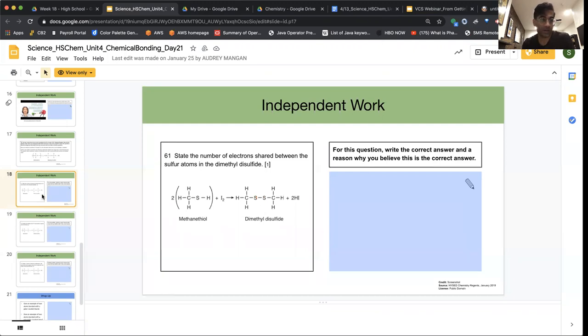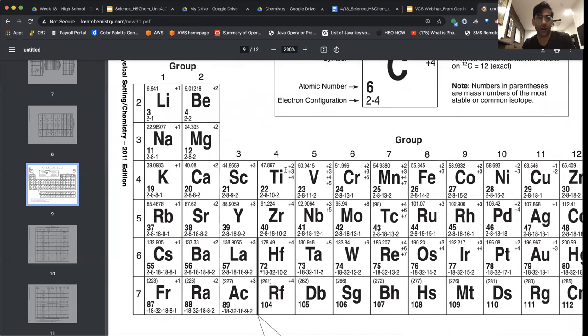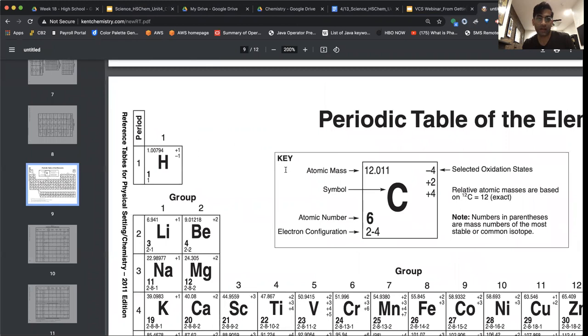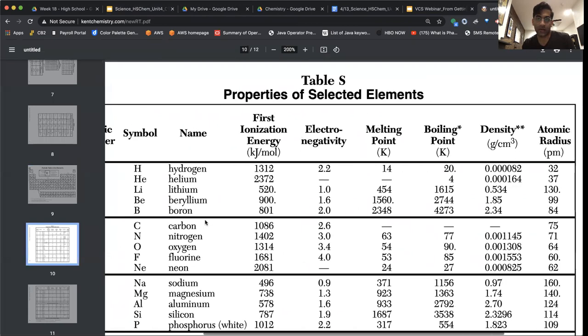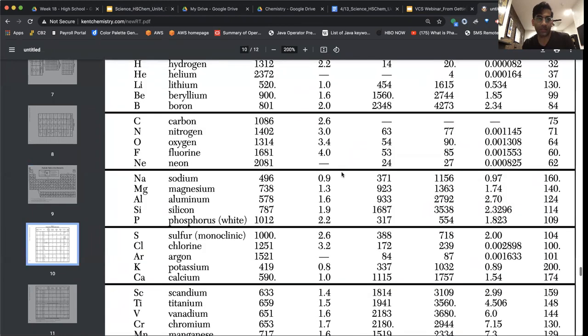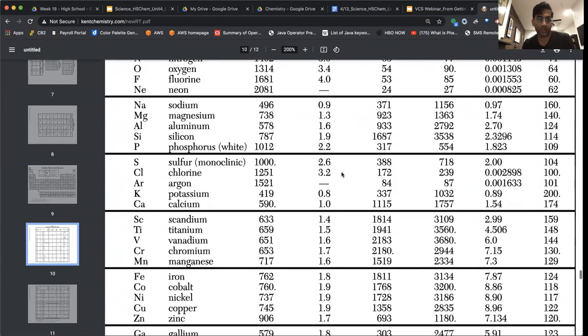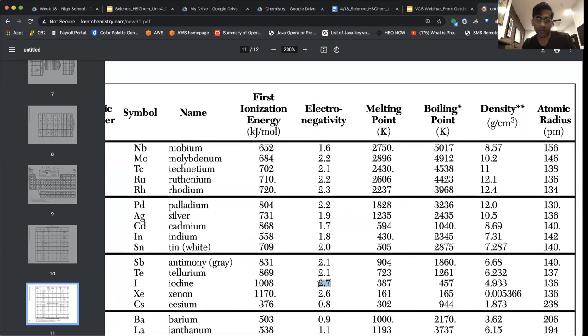Now just to look at the other two really quickly, you want to think, when we identify the polarity of an HI bond versus SS bond, we're going to compare electronegativities. One more time, back to the periodic table. If I'm comparing hydrogen, I see its electronegativity in table S. So hydrogen has an electronegativity of 2.2. Iodine, which is I, has an electronegativity of 2.7.